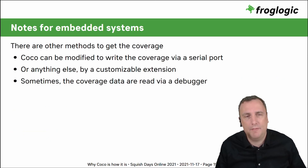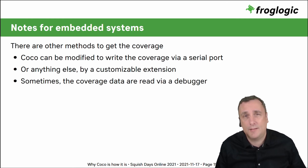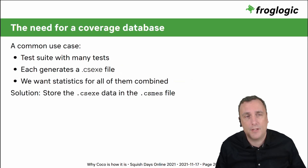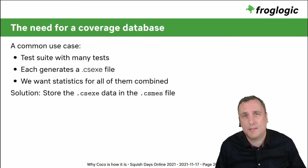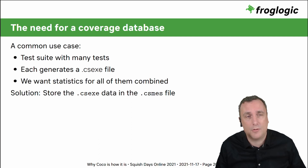You can even avoid writing to a file altogether — transmitting the data over a serial port or any network connection, or keeping everything in memory on the device and later using a debugger to fetch it from the target. You then combine the two by importing execution data into the CSMES file — a coverage database. This architecture keeps all separate test information stored as separate entities in the database, so the tool does not generate a report right away and allows for all kinds of analysis.